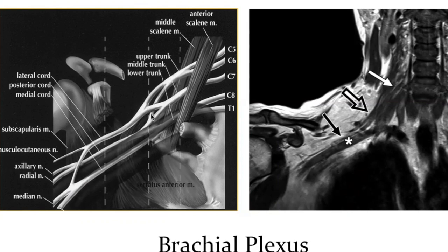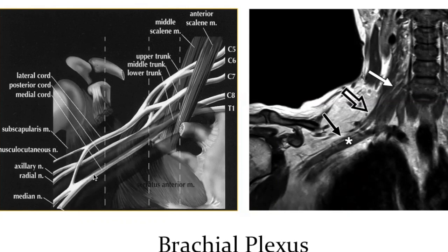The cords extend from the level of the clavicle up to the outer margin of the pectoral muscles, and are named medial, lateral, and posterior depending on their relation to the subclavian artery. The cord medial to the artery is the medial cord, the one lateral is the lateral cord, and the one posterior is the posterior cord. These cords give rise to terminal branches: the medial cord contributes to the median nerve, the ulnar nerve comes solely from the medial cord, the musculocutaneous nerve comes solely from the lateral cord, and the posterior cord divides into the axillary and radial nerves.